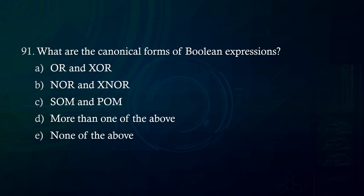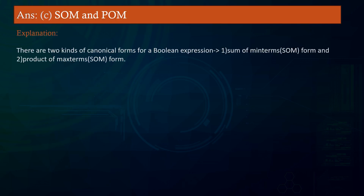What are the canonical forms of Boolean expressions? A. OR and XOR. B. NOR and XOR. C. SOP and POS. D. More than one of the above. E. None of the above. Answer: SOP and POS. Explanation: There are two kinds of canonical forms for a Boolean expression: (1) Sum of Minterms (SOP) form, and (2) Product of Maxterms (POS) form.